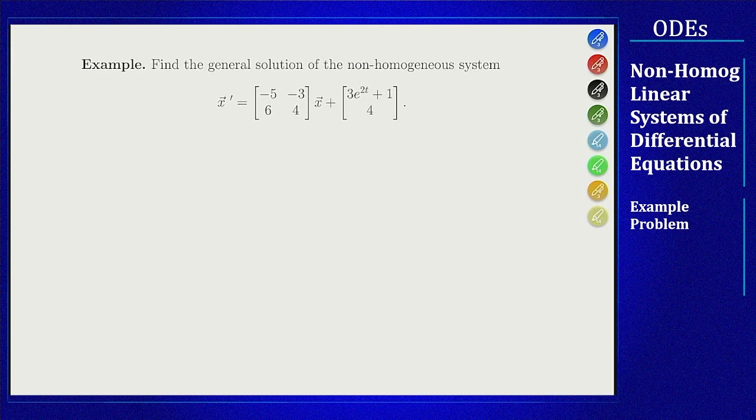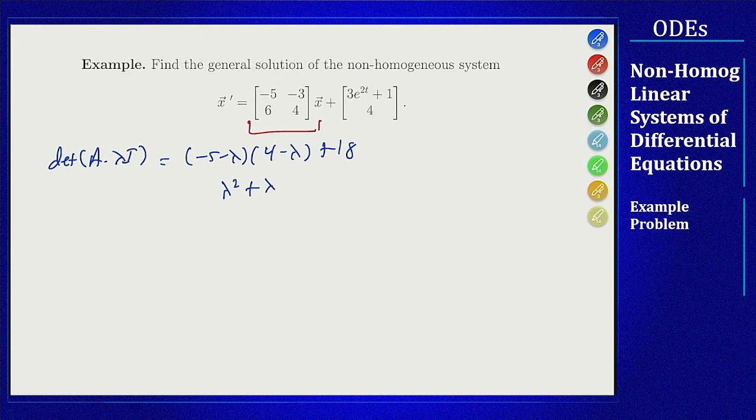We start by finding the general solution of the homogeneous part. We need that to build into everything else, and so we will do that first by finding the eigenvalues and eigenvectors of this matrix. The determinant of A minus lambda I is minus 5 minus lambda times 4 minus lambda plus 18, which gives lambda squared plus lambda minus 2, which factors as lambda plus 2 times lambda minus 1.